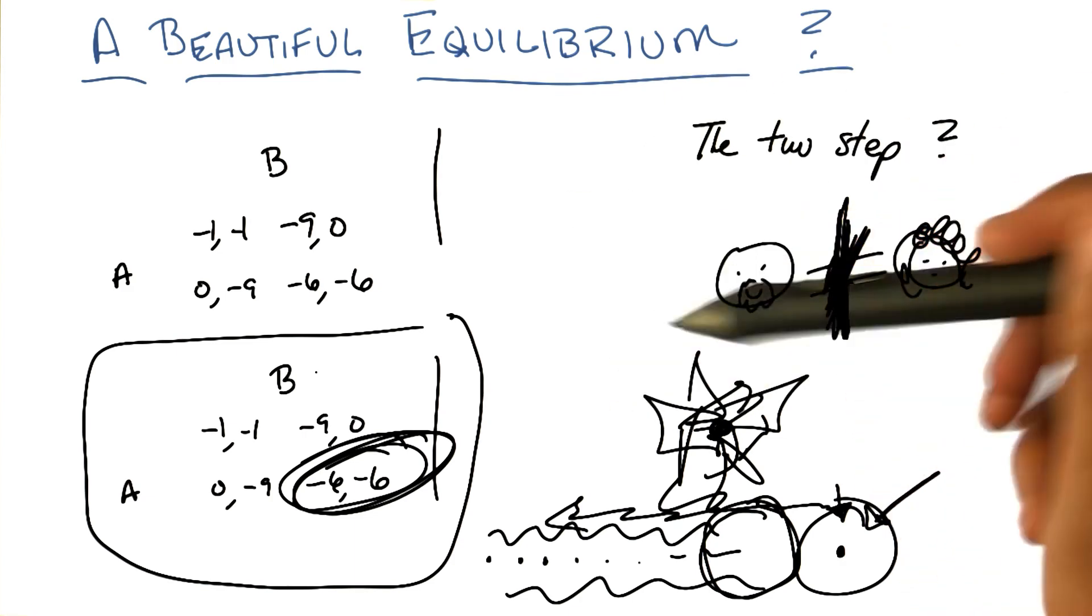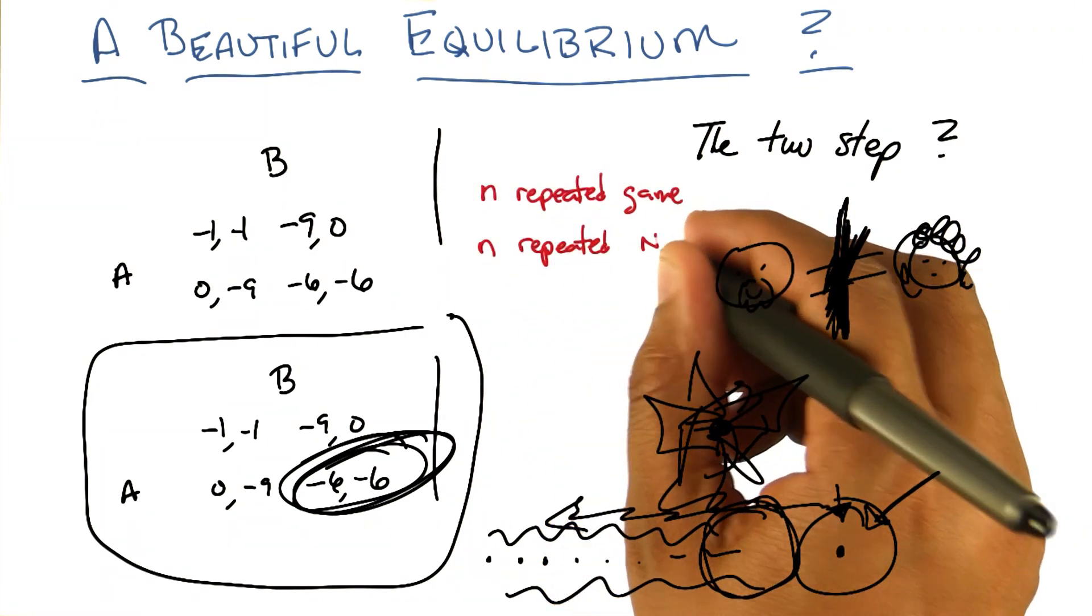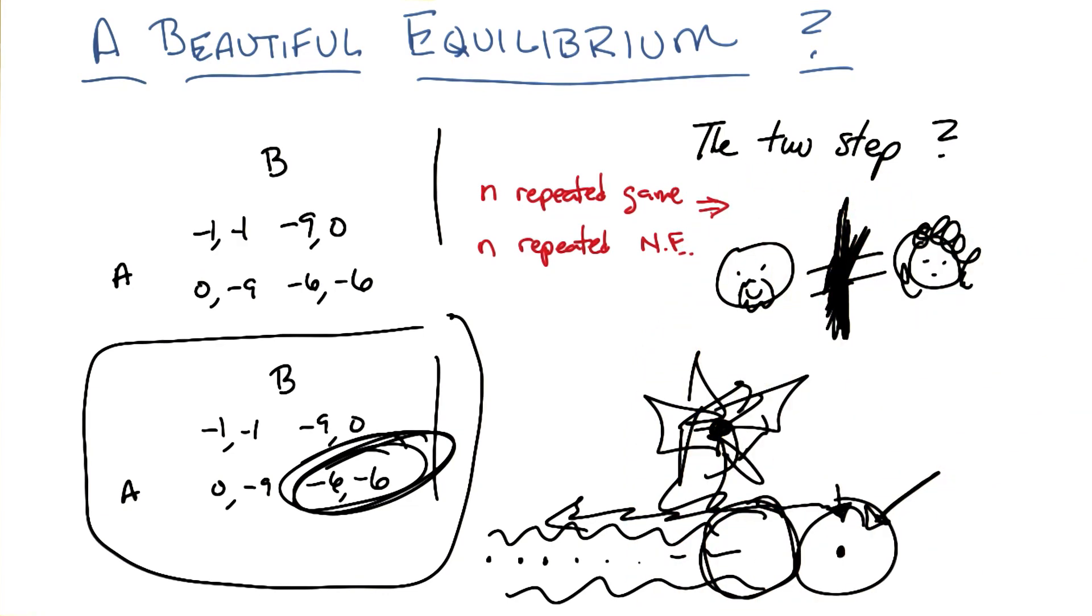And by the way, this is not just something I'm making up. This is another theorem that comes out of Nash equilibrium. That if you have an n-repeated game, then the solution is n-repeated Nash equilibrium. So, whatever the Nash equilibrium is for the first game, the one version of the game, is the repeated Nash equilibrium for all versions of that game.